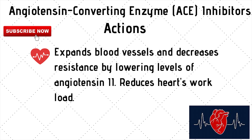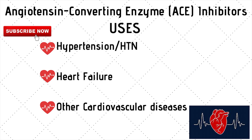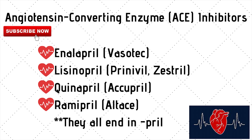Angiotensin converting enzyme, or ACE inhibitors — what these drugs do is they expand your blood vessels, which decreases the resistance of your blood vessels, reducing the amount of work that your heart has to do. ACE inhibitors are used to lower blood pressure or treat hypertension, treat heart failure, and other cardiovascular diseases. Common ACE inhibitors are enalapril (Vasotec), lisinopril (Zestril), quinapril (Accupril), and ramipril (Altace). Most of these drugs end in the letters P-R-I-L.